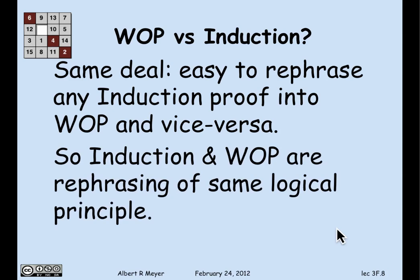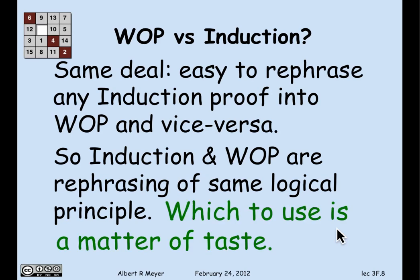It also means conceptually that these apparently different inference rules — strong induction, ordinary induction, and the well ordering principle — there's really only one, and the others can be justified in terms of it and explained as variations of it. So it's intellectually economical to not have a proliferation of different reasoning principles. Which brings us to the question of which one to use, and all I can say is that it's a matter of taste.